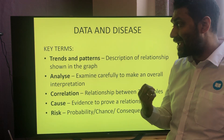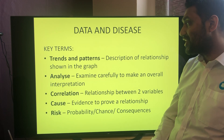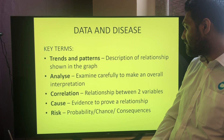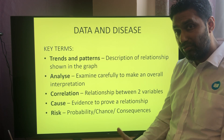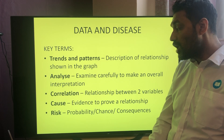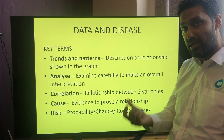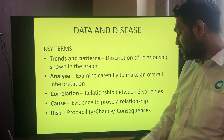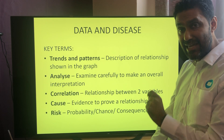Key terms we really need to get our heads around — this is quite a fundamental idea in biology. A trend or pattern is a description of the relationship shown in a graph between usually two sets of data. Analysis is the careful examination to make an overall interpretation of data. Correlation is a relationship between two variables. Cause is the evidence to prove a relationship — that one thing has caused the other thing to change. And risk is the probability or chance of the consequences of one thing affecting something else.